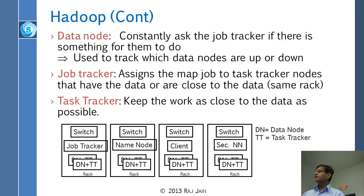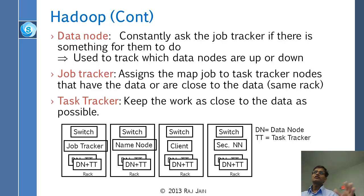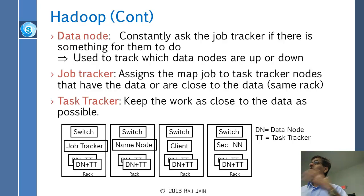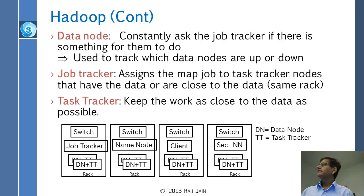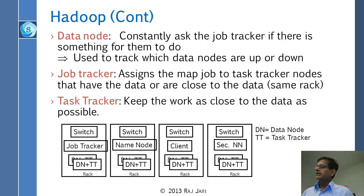You could create 10 VMs on one CPU — one VM does the Job Tracker, one does the Name Node, and several do the data node and task tracker roles. Or you could put everything on one physical processor. In that case you get no parallelism since everything runs serially. But you can divide the roles any way you want. The Data Node and Task Tracker generally go together — they are the computation doers.